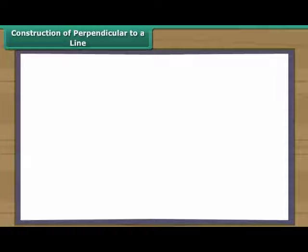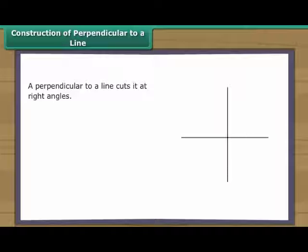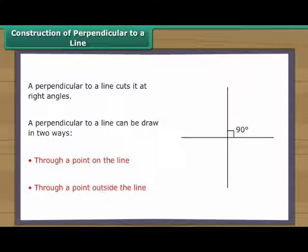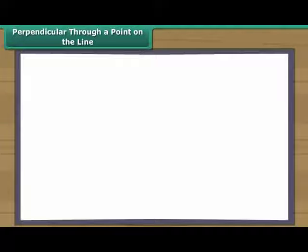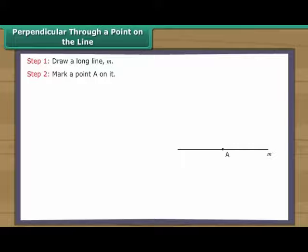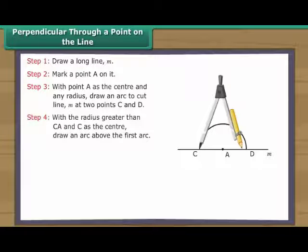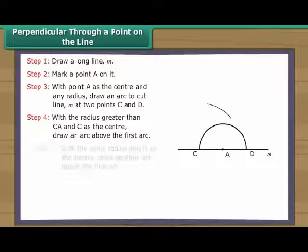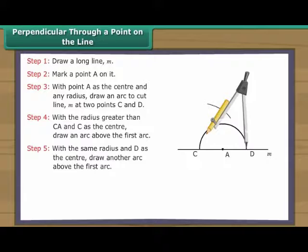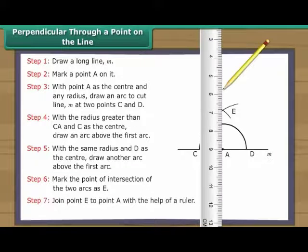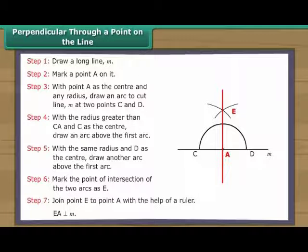Construction of perpendicular to a line. A perpendicular to a line cuts it at right angles, and can be drawn in two ways: through a point on the line, or through a point outside the line. Perpendicular through a point on the line: Draw a long line M and mark a point A on it. With point A as the centre and any radius, draw an arc to cut line M at two points C and D. With a radius greater than CA and C as the centre, draw an arc above the first arc. With the same radius and D as the centre, draw another arc above the first arc. Mark the point of intersection of the two arcs as E. Join point E to point A. EA is perpendicular to line M.